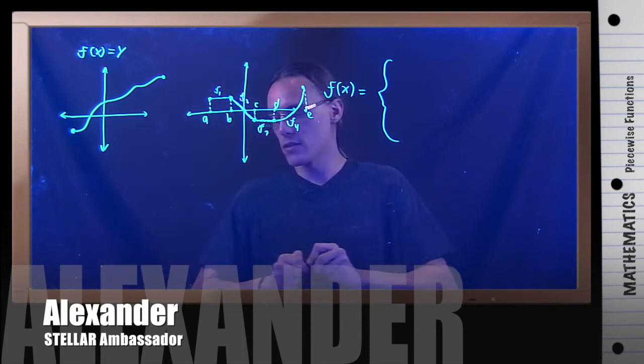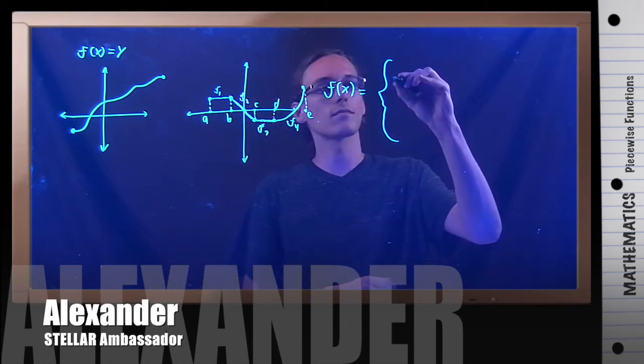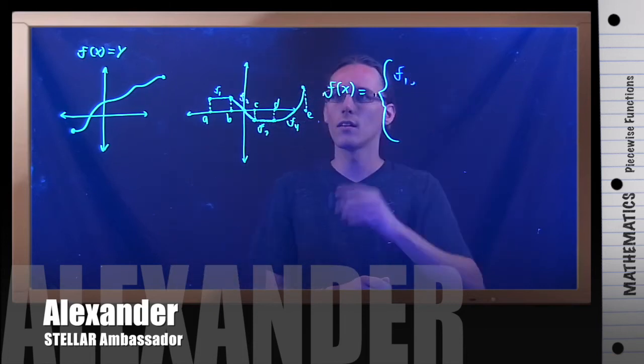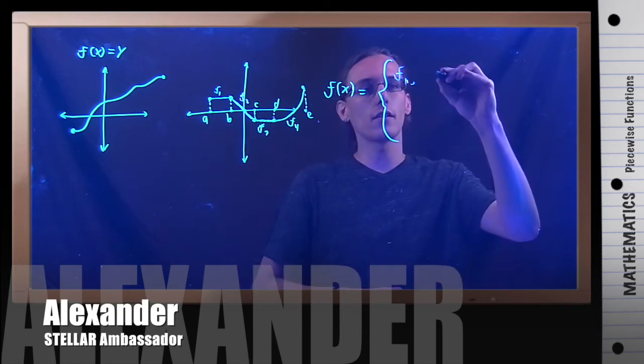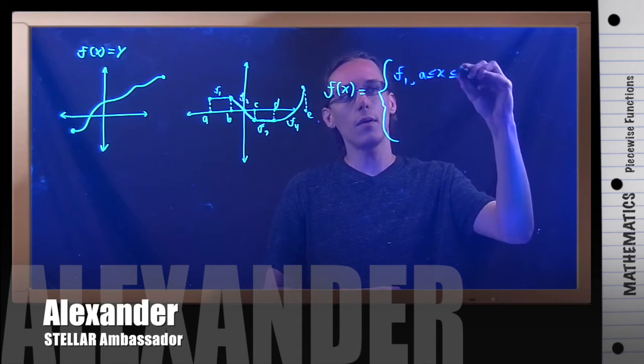So I'm actually going to need to give values for that as well. Actually, I'm going to use my F1s. So if this right here, this is function F1. But then we say, comma, where do I use function F1? Well, you use it when x is greater than or equal to a, and when it's less than or equal to b.